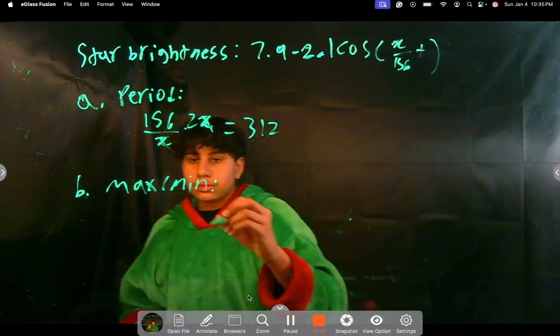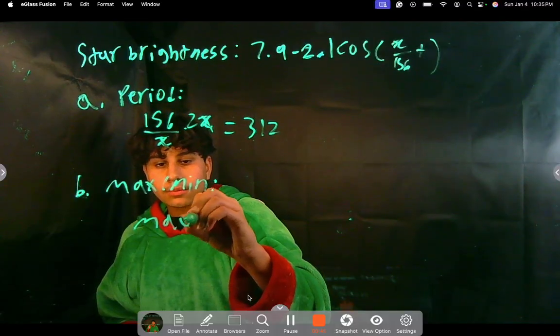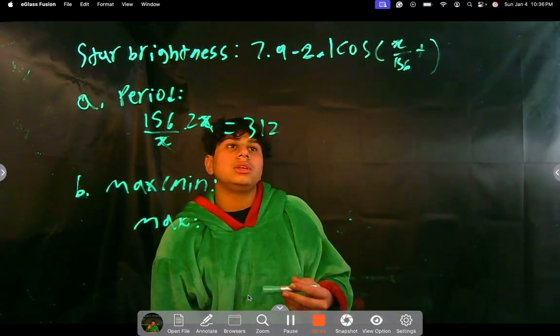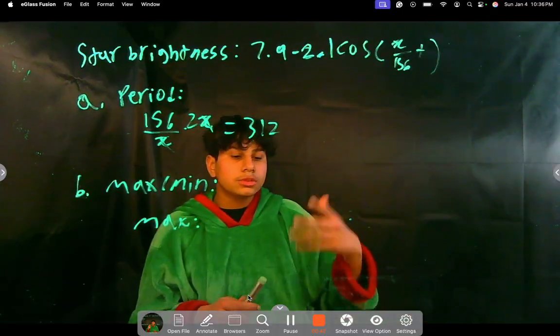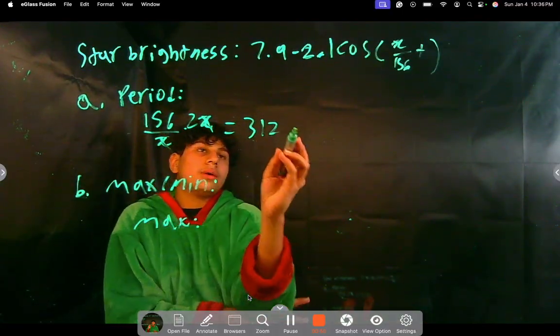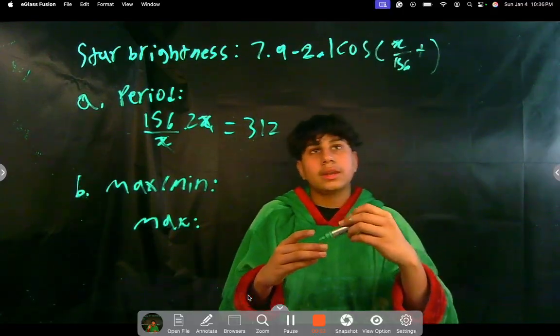Now we have to find the max and the min points. How are we going to do that? Well, this is similar to the last problem that we did. First we'll find what the two points are. We multiply negative 2.1 by 1 and negative 1.